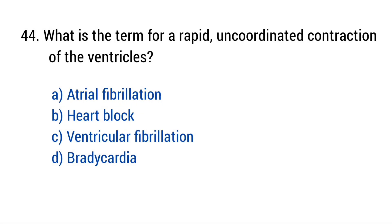Question number 44. What is the term for a rapid uncoordinated contraction of the ventricles? The right answer is option C. Ventricular fibrillation.